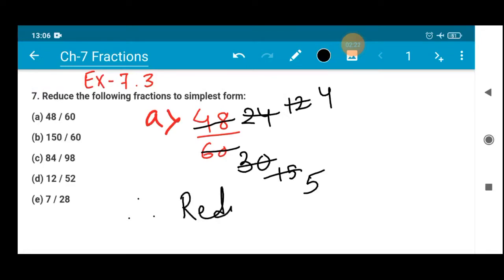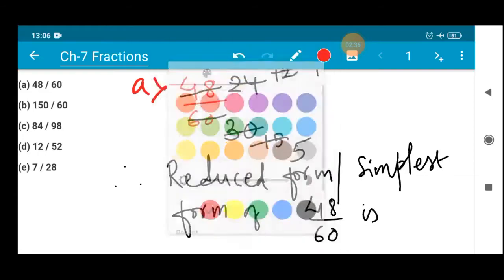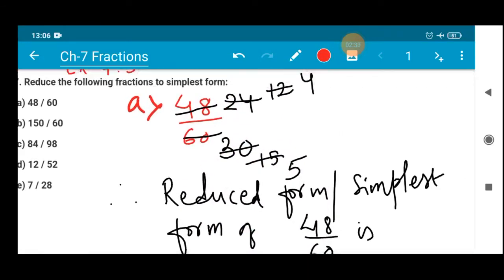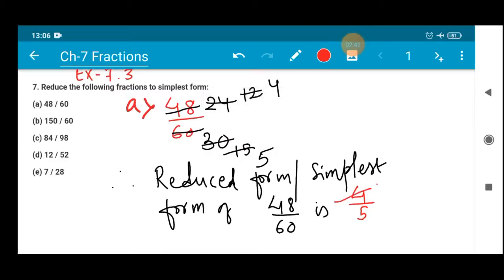So you will write reduced form or simplest form. The simplest form of 48 by 60 is 4 by 5. Now after 4 by 5 we cannot have a cut. Just see, 2 to the 4 can be done, but 2 to 5 cannot be divided with 2. So this is the reduced form of 48 and 60.